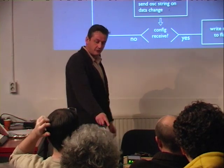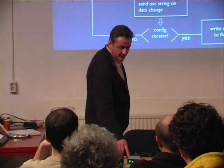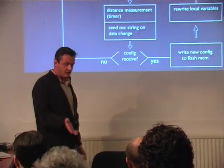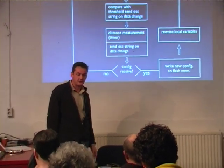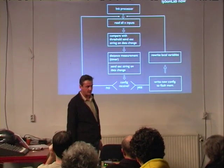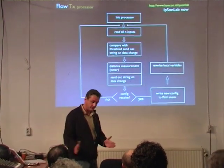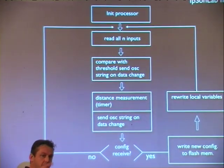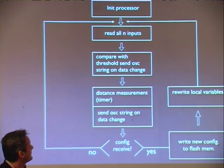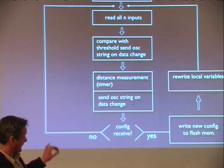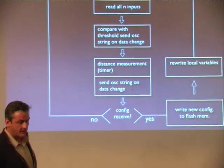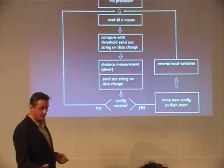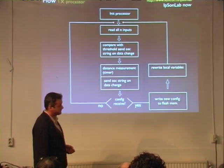When you only use two sensors, for example, you better put it to four inputs, because the loop of multiplexing is much, much better. I also use the flash memory to store the values, which are still there when you start up next time.